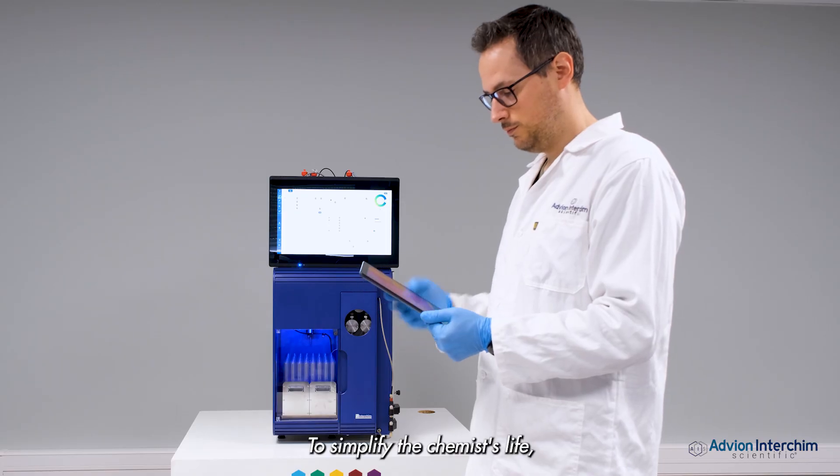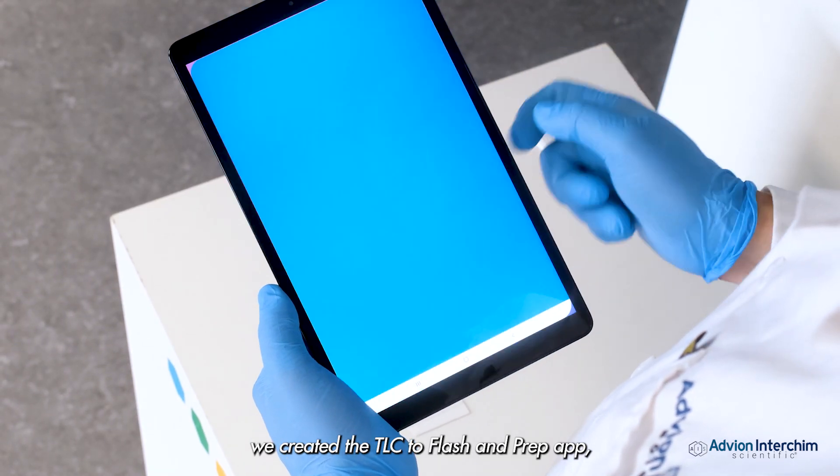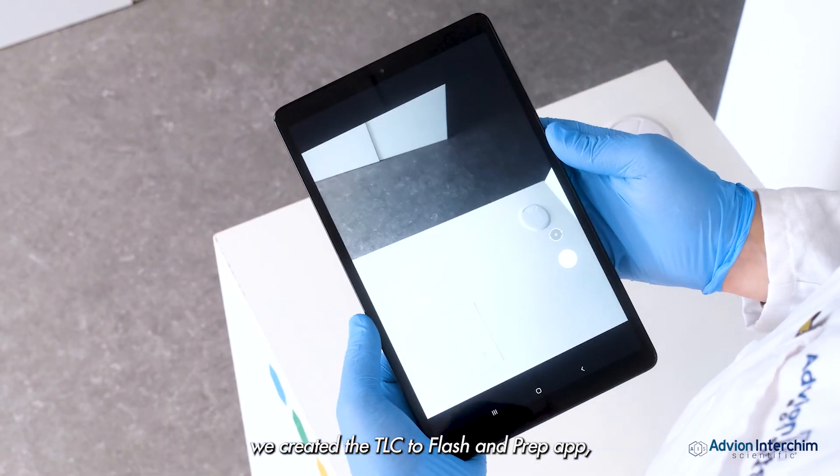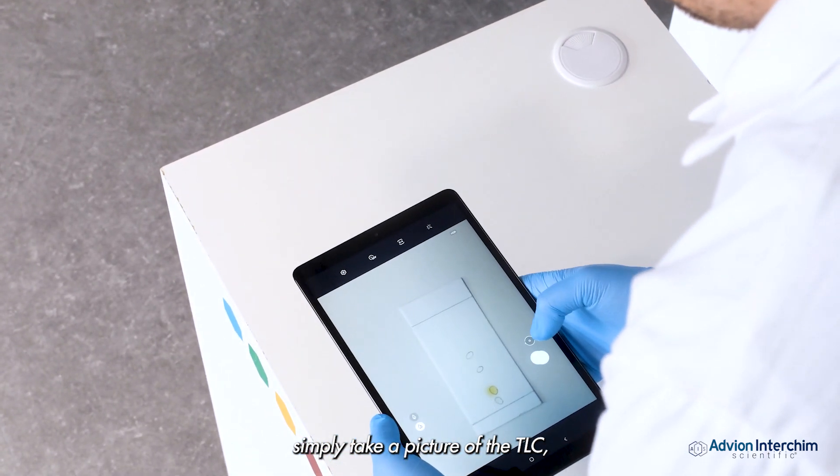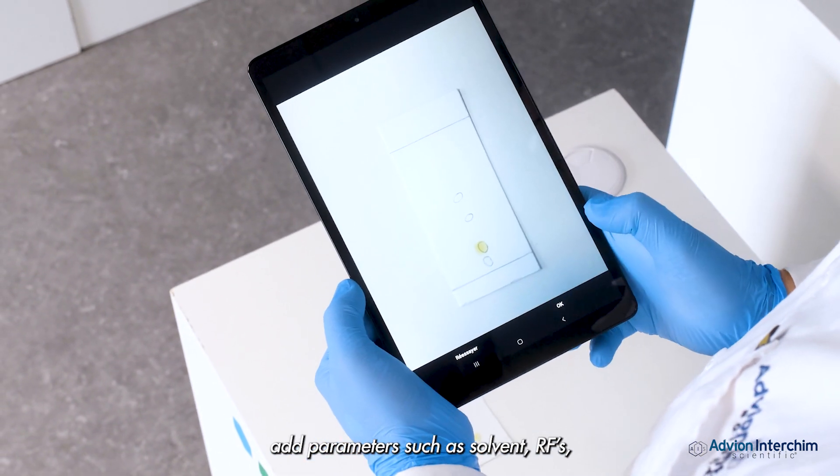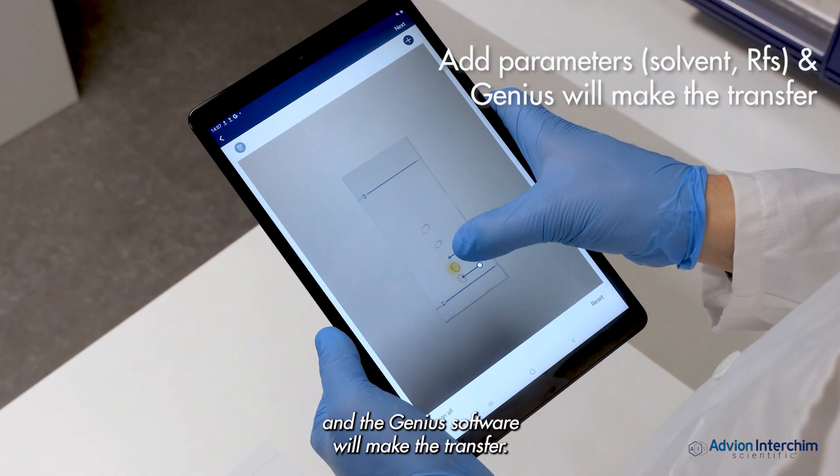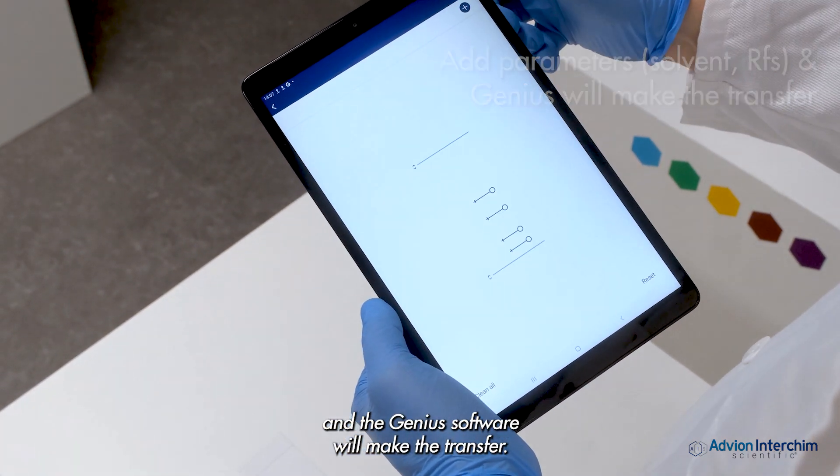To simplify the chemist's life, we created the TLC to Flash and Prep app. Simply take a picture of the TLC, add parameters such as solvent and RFs, and the Genius software will make the transfer.